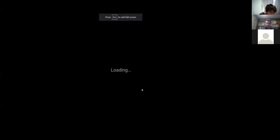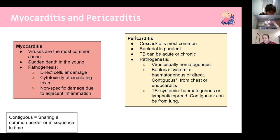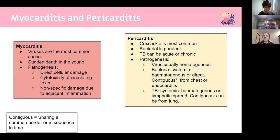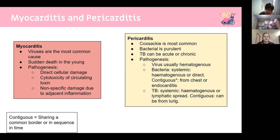Pericarditis is inflammation of the fibrous pericardium that holds the heart in place. It's often caused by Coxsackievirus. Bacterial pericarditis is purulent — producing pus — which is dangerous because the buildup of pressure in the fibrous tissue can lead to heart failure as the heart can't expand to contract. TB can also cause pericarditis and can be acute or chronic. Spread can occur via hematogenous or lymphatic routes, or contiguously from adjacent chest structures like the lungs in TB.